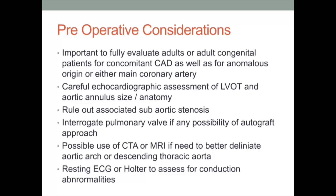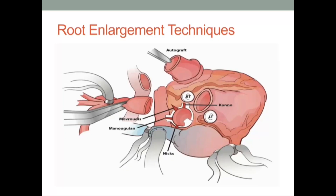Mitral valve architecture and the degree of potential insufficiency should be noted, as this may be altered following aortic root enlargement. Adult congenital patients, in particular, who may have history of associated arch anomalies, may require a CT or MRI scan to ensure that these structures and potential anatomic anomalies are well defined. Finally, a resting ECG should be ordered and reviewed to evaluate for any preoperative signs of atrial level dysrhythmia, which may be addressed at time of surgical intervention.